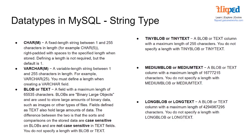Blob or text is a field with a maximum length of 65,535 characters. Blobs are binary large objects used to store large amounts of binary data, such as images or other types of files. Text fields also hold large amounts of data. The difference is that sorts and comparisons are case sensitive on blobs and not case sensitive on text fields. You do not specify a length with blob or text. Tiny blob or tiny text has a maximum length of 255 characters. Medium blob or medium text has a maximum length of 16,777,215 characters. Long blob or long text also exists, and you do not specify a length with any of these types.